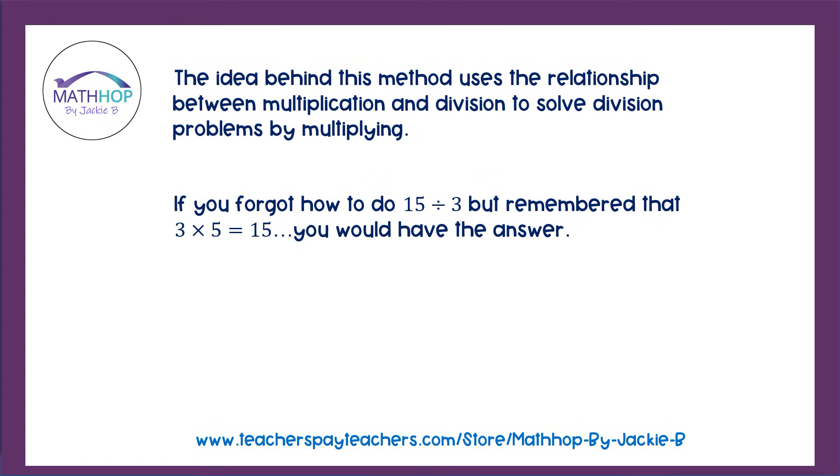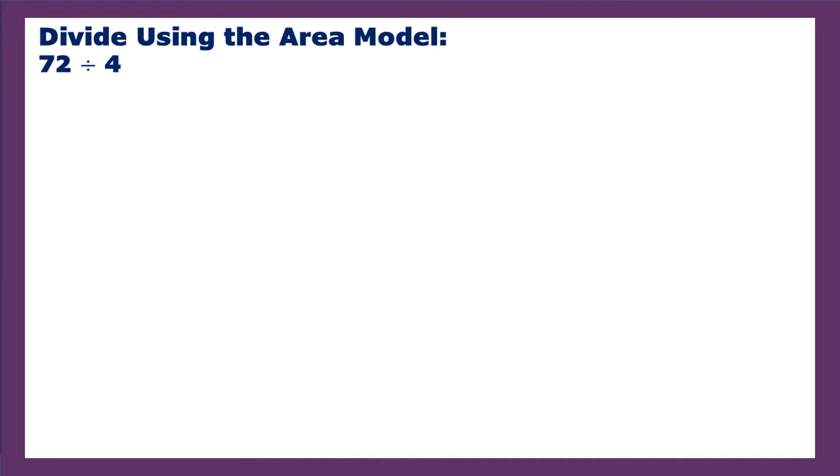So what I mean is if you somehow forgot how to do 15 divided by 3 but you remembered that 3 times 5 was equal to 15, you would know that you would have the answer to 15 divided by 3 simply because 15 divided by 3 is 5 because 5 times 3 is 15. So it takes the fact that multiplication and division are opposites and says you're going to divide this problem by using your knowledge of multiplication. So let's see how it works.